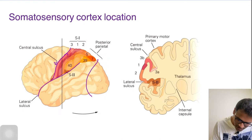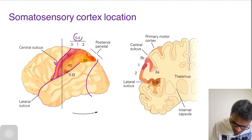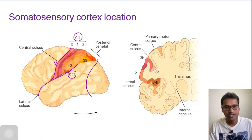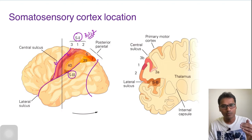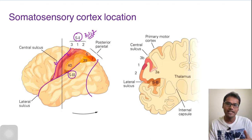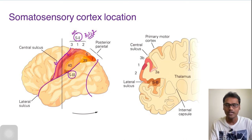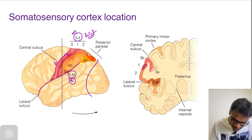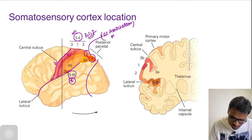Just behind the central sulcus we have our somatosensory cortex, divided into somatosensory cortex 1 and somatosensory cortex 2. You can see numbering 3, 1, and 2 — these are Broadman's areas, where Broadman identified more than 50 areas and depicted them to have individual functions. The somatosensory cortex has three regions: Broadman's area 3, 1, and 2. Somatosensory cortex 2 does not have a number designated. Broadman's areas 5 and 7 are represented as somatosensory association areas — please remember this, as it has been asked in MCQs.